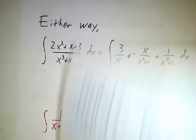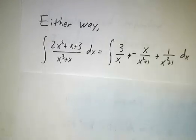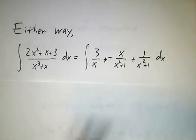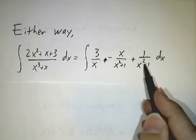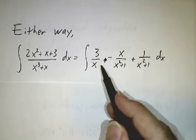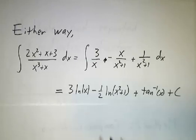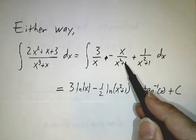Whichever way you do it, you break it down and you say our original fraction was 3 over x plus minus x plus 1 over x squared plus 1, and then we integrate each term separately. The first term gives natural log of x.